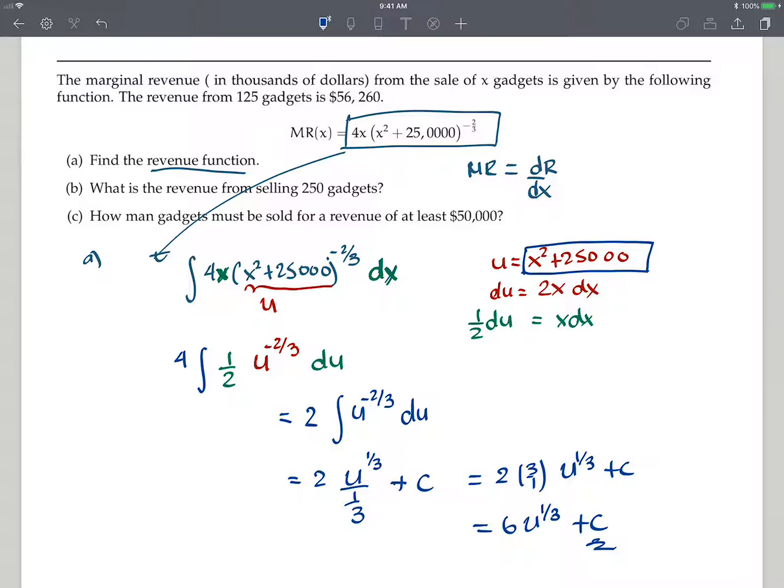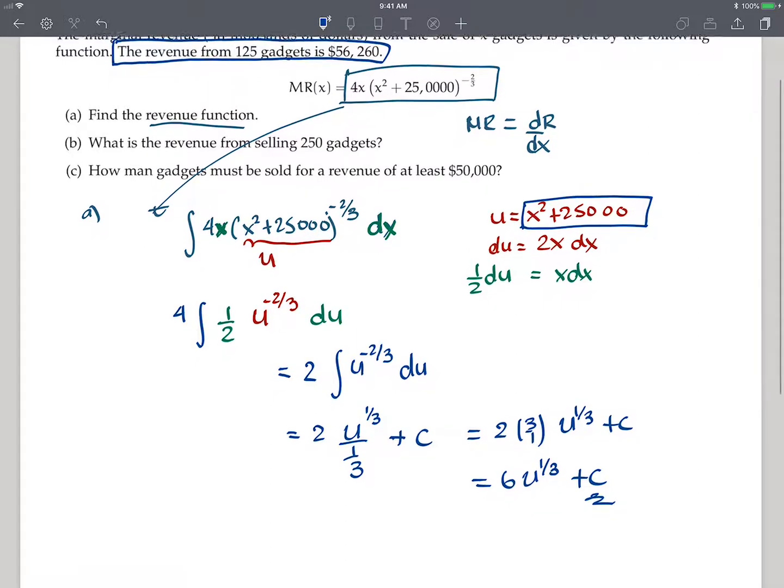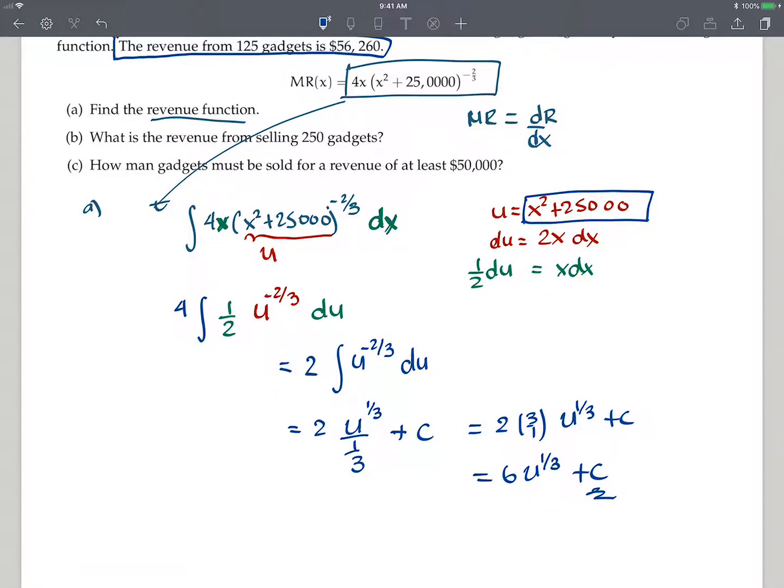And to find c, we're going to use this fact. That they're giving us the revenue function from 125 gadgets is 56,261. Okay? So let's see if I can do that. I don't want to erase this. Let me see if it fits right there. So a couple of things I'm going to write here. I'm going to write, so my revenue function so far becomes six times x squared plus 25,000 to the 1/3 plus a constant. And then we know that the revenue function when plugged in 125 should be 56.261.